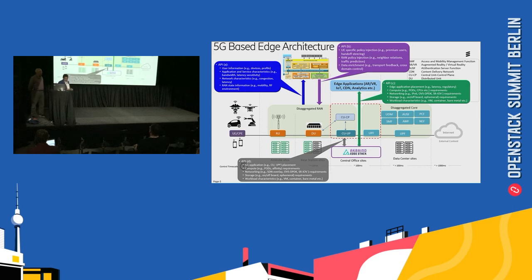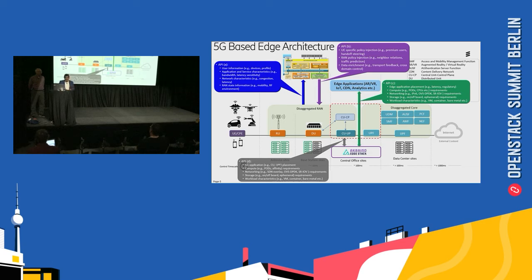Finally, API category D is similar to API category C in terms of nature and characteristics, but consists mainly of RAN and core network applications — for example, what type of application you are onboarding, whether it's the CUUP or the user plane function of the core. The same types of compute, networking, storage information, and workload characteristics are needed for these applications to be onboarded.